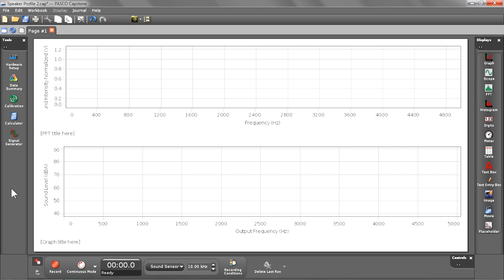As you can see here I already have two displays set up in the software. The top is a fast Fourier transform display showing the data from my Science Workshop sound sensor. And the bottom is a sound level versus output frequency graph which is going to show the data from my passport temperature sound level light sensor.